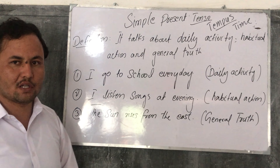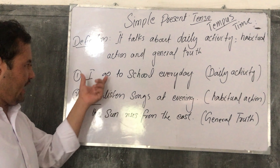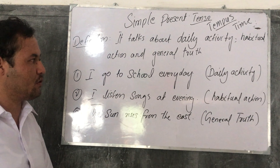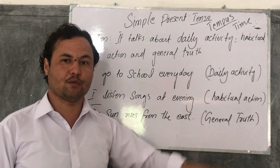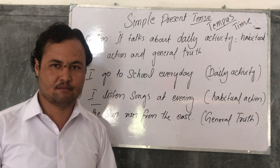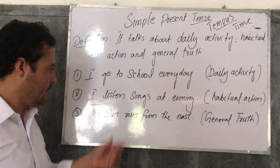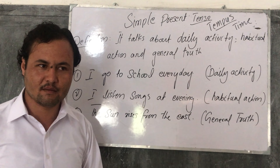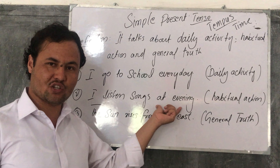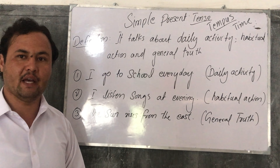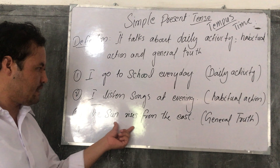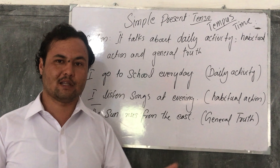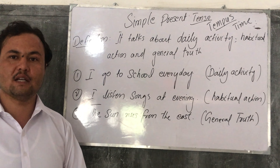I have made three example sentences here. Number one: 'I go to school every day' — this is a daily activity, an action I perform every day. Number two: 'I listen to songs in the evening' — this is a habitual action, adopted by habit. Number three: 'The sun rises from the east' — this is a general truth. Another example of general truth: 'The sky is blue.'